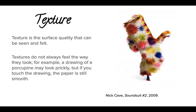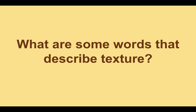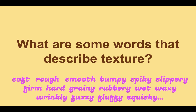Texture is the surface quality that can be seen and felt. Textures do not always feel the way they look. For example, a drawing of a porcupine may look prickly, but if you touch the drawing, the paper is still smooth. How does this wearable sculpture by the artist Nick Cave appear to you? What words do you use to describe texture? Soft, rough, smooth, bumpy, spiky, slippery. There are thousands and thousands of words in the English language that we use to describe the way an object feels.